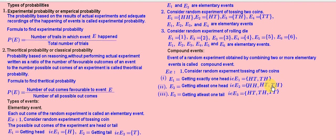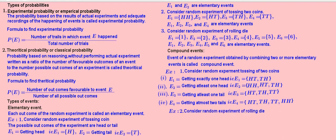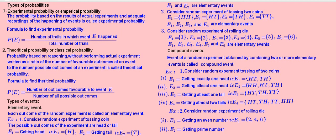Example 4 — getting at most two tails: {HT, TH, TT, HH}. Next example: Consider the random experiment of rolling a die. Event 1 — getting an even number: E1 = {2, 4, 6}, here three elementary events combined together. Event 2 — getting a prime number: E2 = {2, 3, 5}.